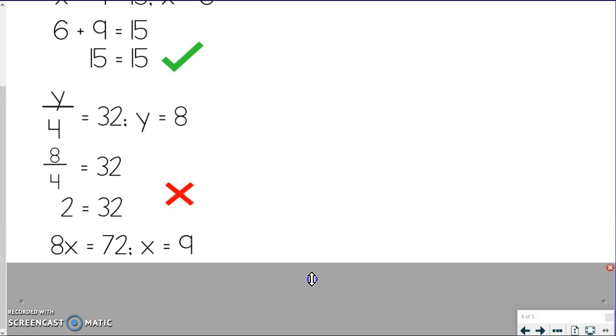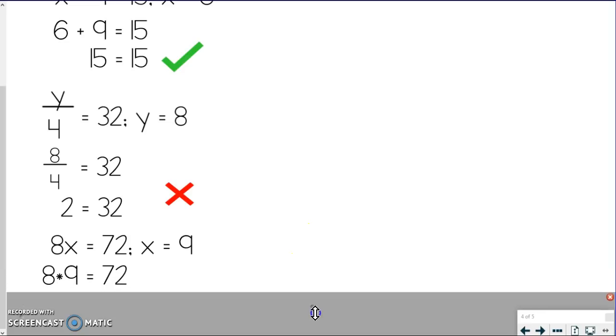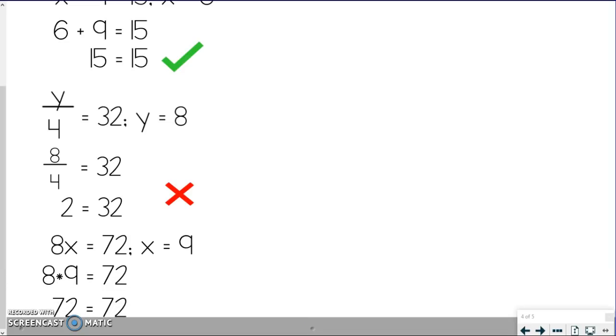Okay? Let's try one more. We've got 8x equals 72, and we want to know if x equals 9 will be a solution. So we substitute first, 8 times 9 equals 72, and 72 does equal 72. And so, yep, it was a solution. So we can put our check mark.